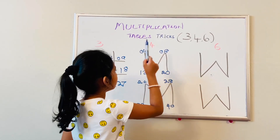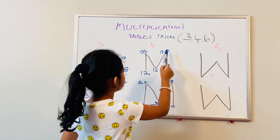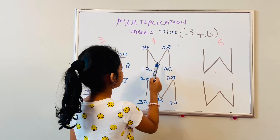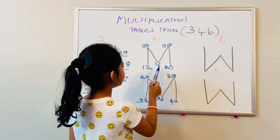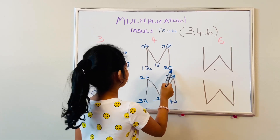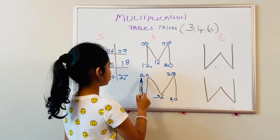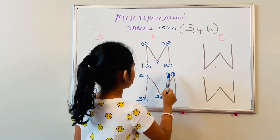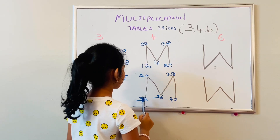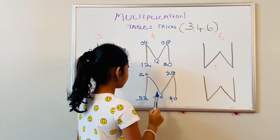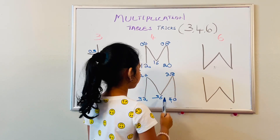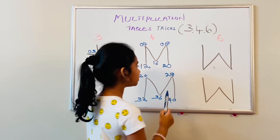Four ones are four. Four twos are eight. Four threes are twelve. Four fours are sixteen. Four fives are twenty. Four sixes are twenty-four. Four sevens are twenty-eight. Four eights are thirty-two. Four nines are thirty-six. Four tens are forty.